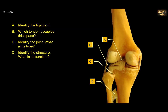Identify the ligament. Ligament A is attached to the posterior horn of the lateral meniscus. Look at the fibula here — this is the lateral side, and this is the posterior aspect of the knee joint. You can see the femoral condyles here. This is the lateral meniscus, and this ligament connects between the posterior horn of the lateral meniscus and the medial condyle of the femur.